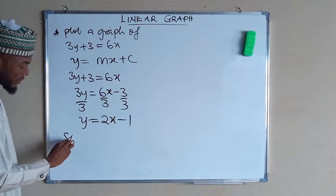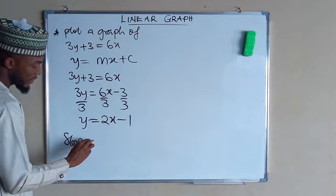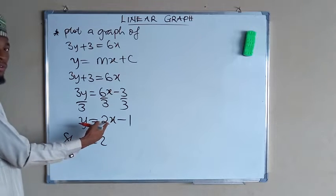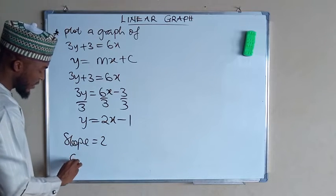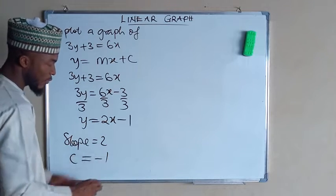So here, our slope equals 2, which is the coefficient of x. And the c, which is the intercept, is negative 1.